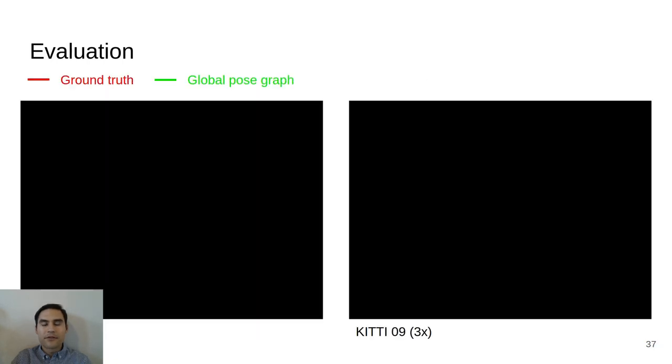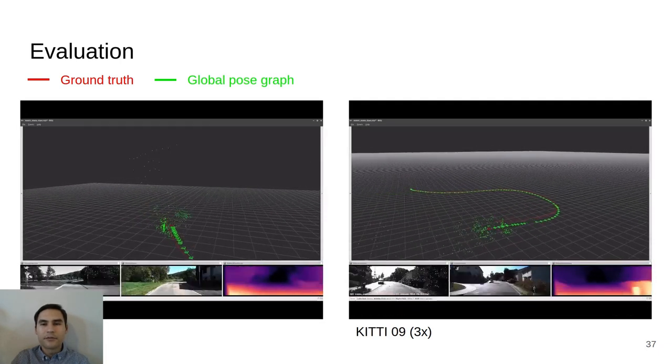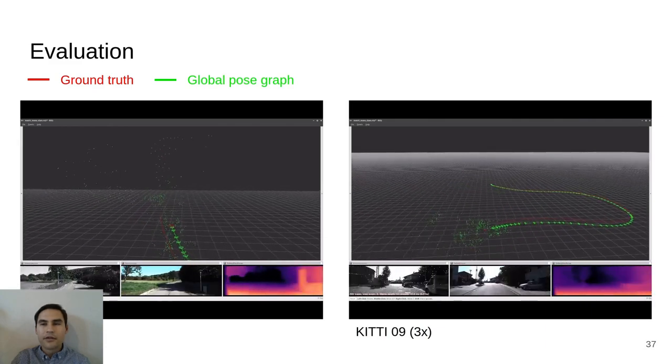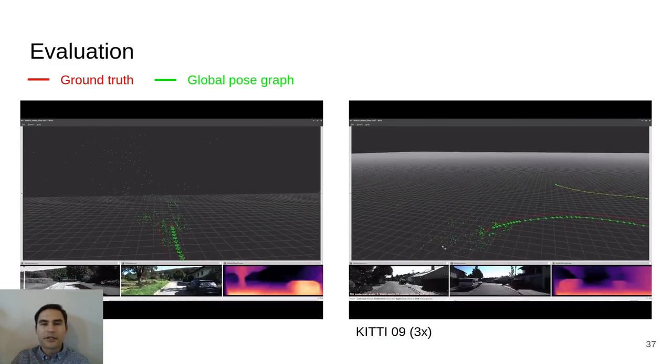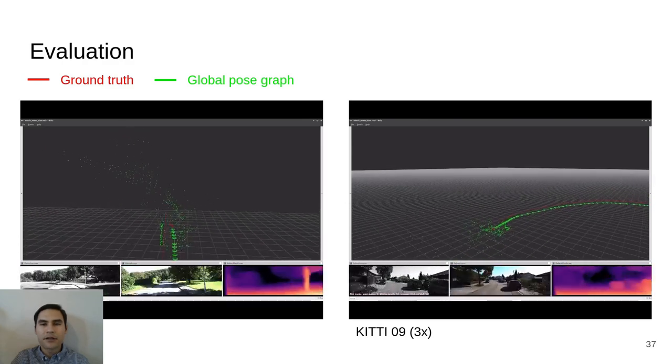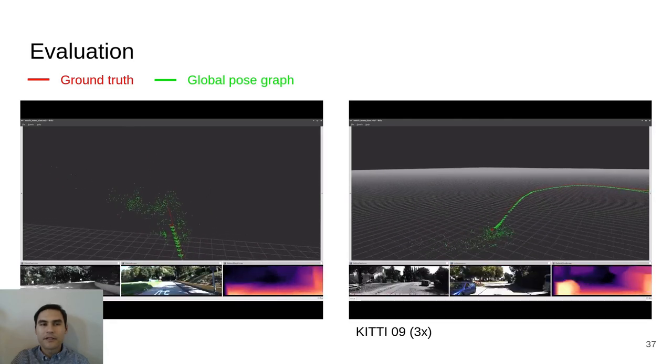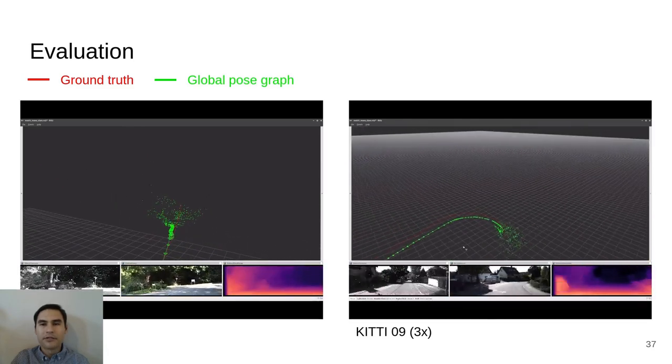Here we show examples of our pipeline running on the KITTI Odometry benchmark. The ground truth pose is shown in red and our global pose graph is shown in green. The coarse depth maps estimated by our depth prediction network are shown in the bottom right. As can be seen by how closely our trajectory in green tracks the red ground truth, our method is capable of estimating accurate metric poses using only monocular imagery.